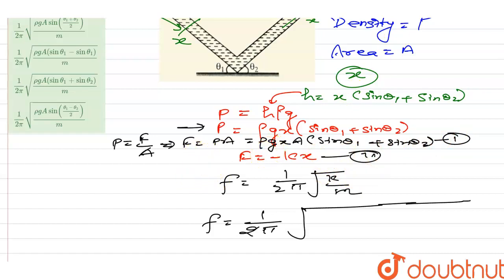After comparing the equations, k = ρgA(sin θ₁ + sin θ₂). So frequency = 1/(2π)√[ρgA(sin θ₁ + sin θ₂)/m]. This is the formula for the frequency.